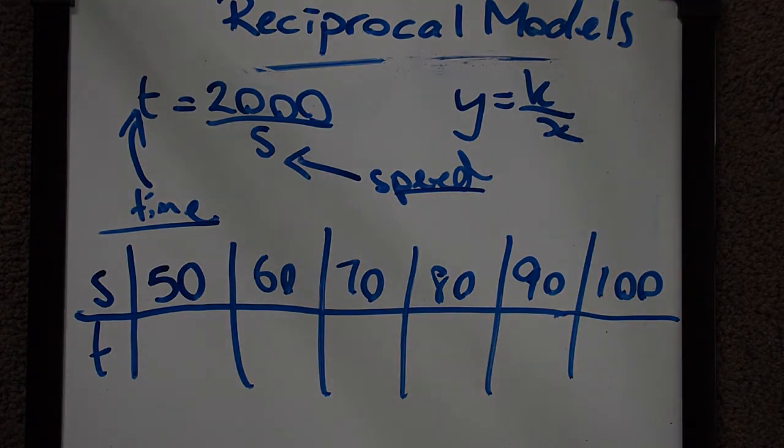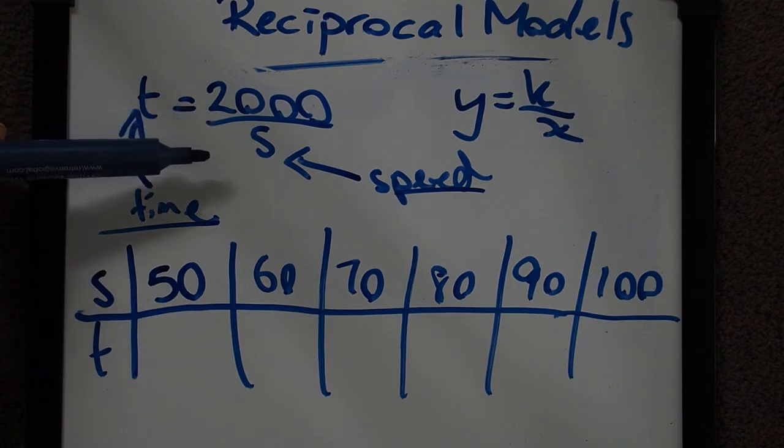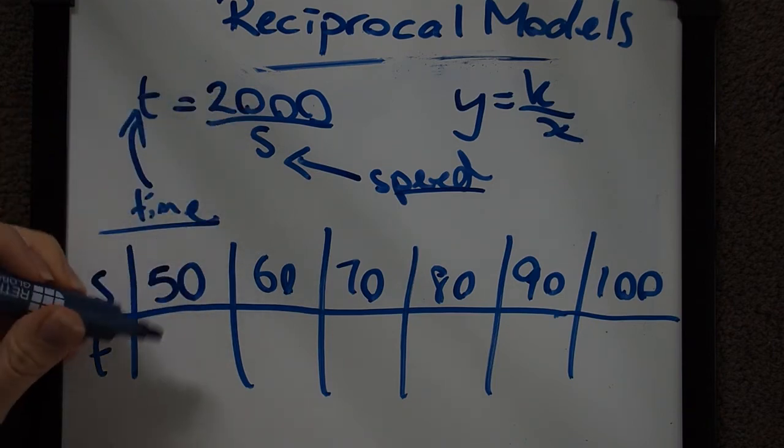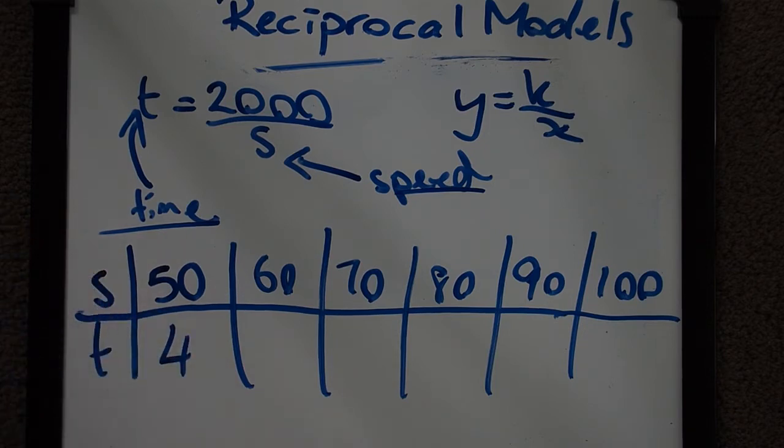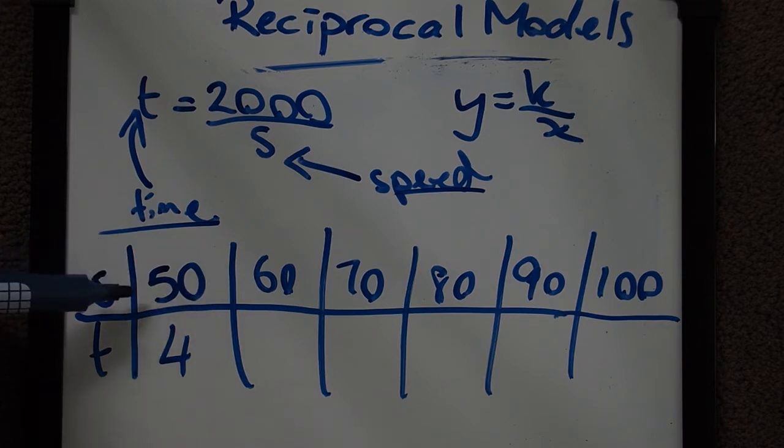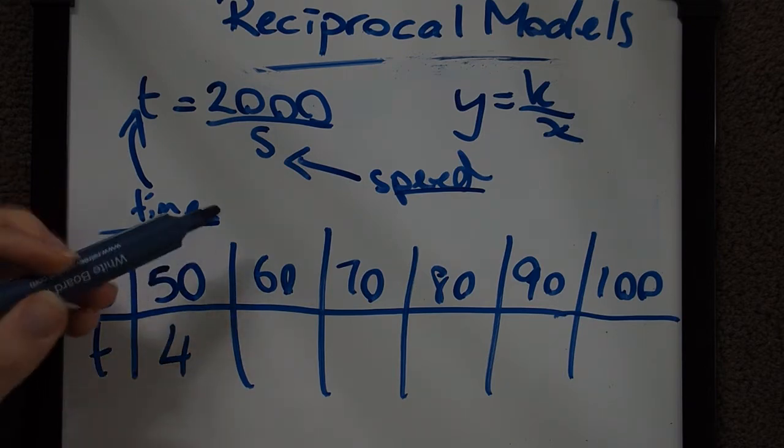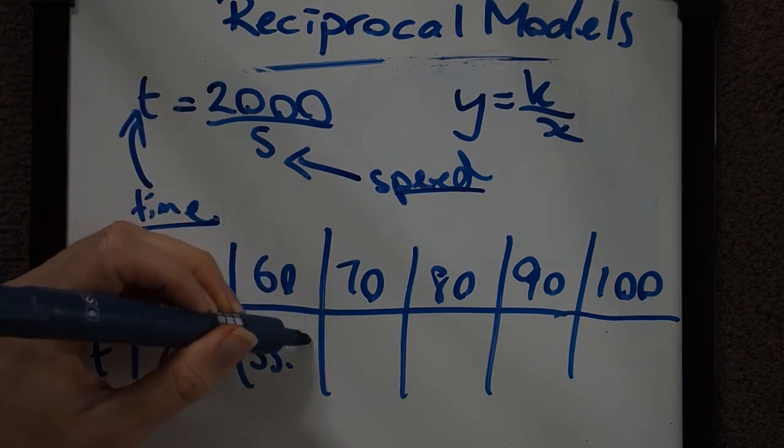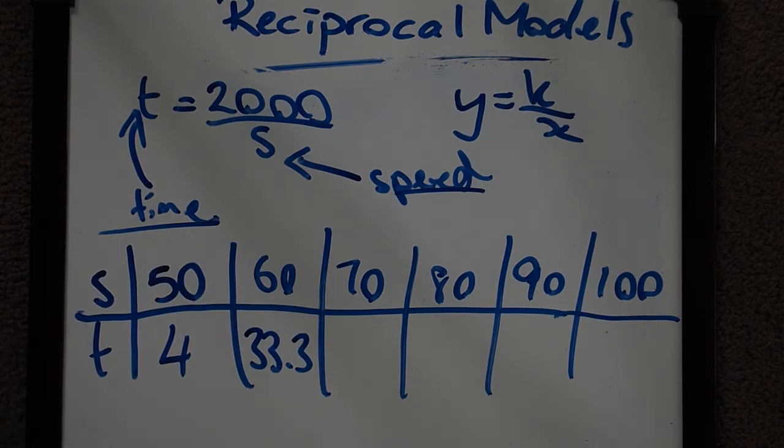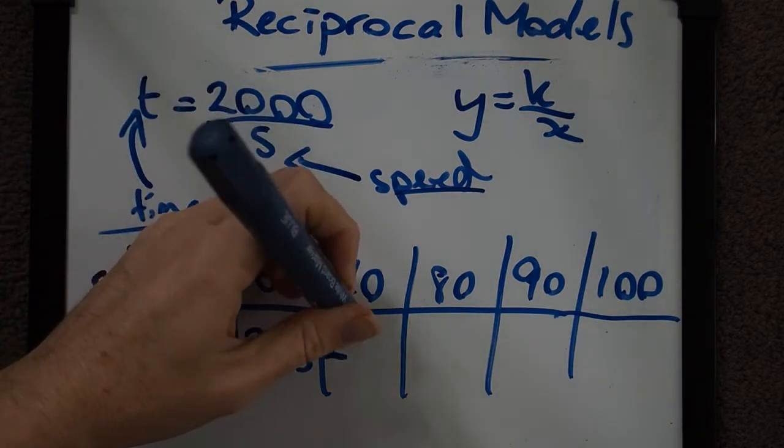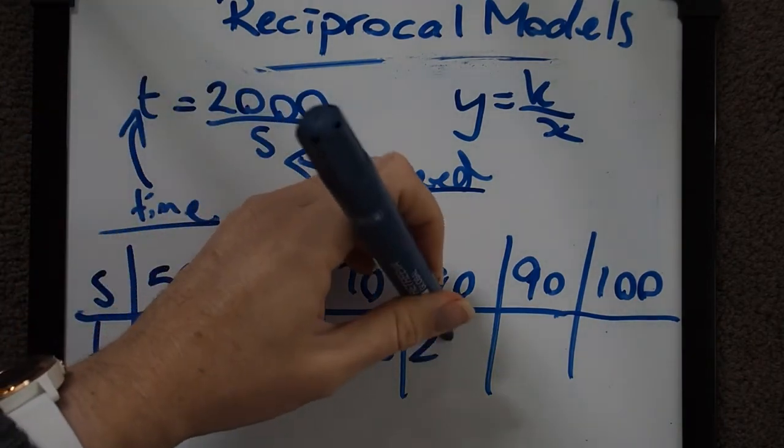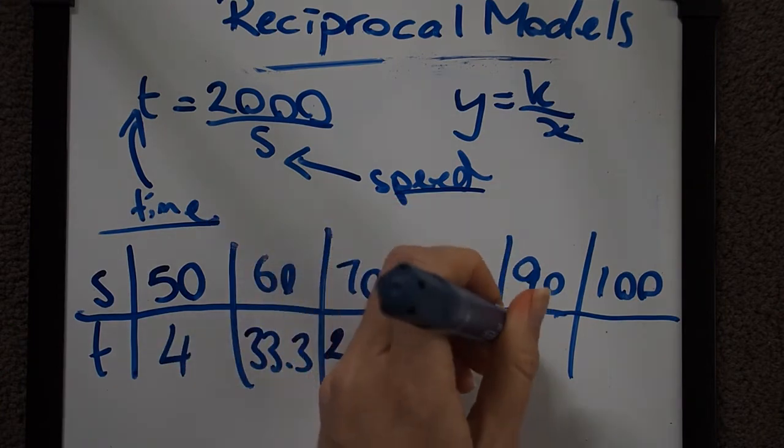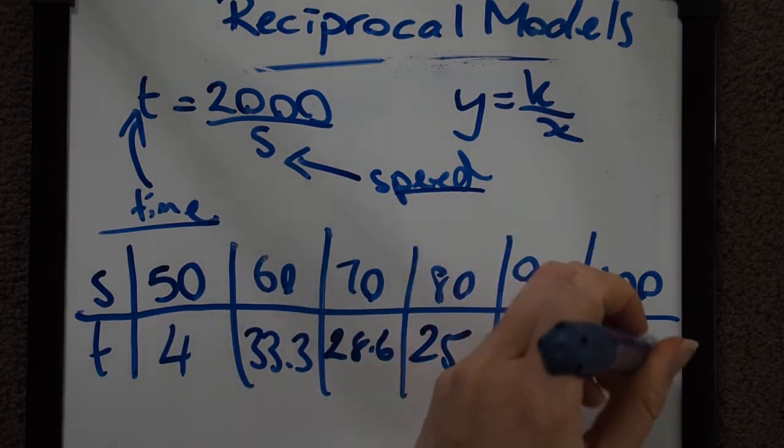Then it's just a matter of inputting our s values into our function. 2000 over 50 gives us 4. In practical terms that means that traveling at a speed of 50 kilometers per hour this particular road trip will take us 4 hours. Traveling at a speed of 60, so 2000 over 60 gives us 33 and a third. I'm just going to take that to one decimal place. 2000 over 70 becomes 28.6, over 80 is 25, 90 is 22.2 and 100 is a nice round 20.